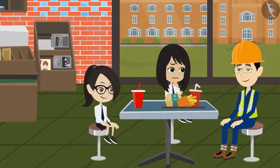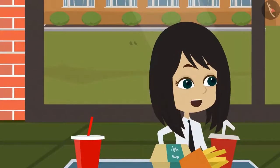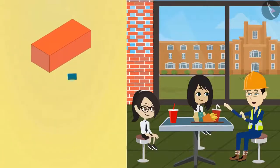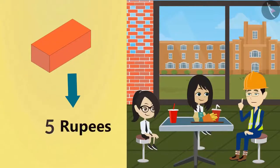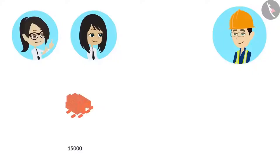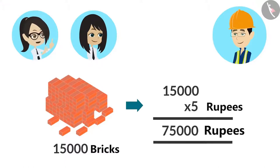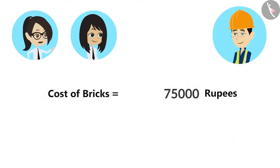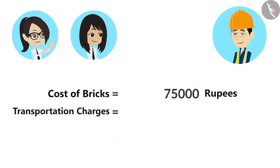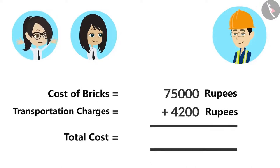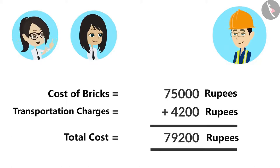Sir, you have not told us the cost of one brick. If you tell us that, we will be able to calculate the total cost. The cost of one brick is Rs. 5. If one brick costs Rs. 5, then 15,000 bricks will cost 15,000 multiplied by 5, which is Rs. 75,000. Total cost of bricks is Rs. 75,000 and the transportation charges are Rs. 4,200. Therefore, the total cost is Rs. 79,200.